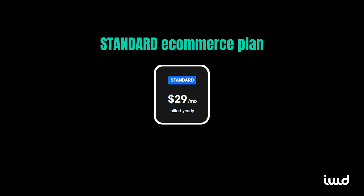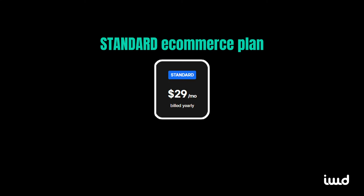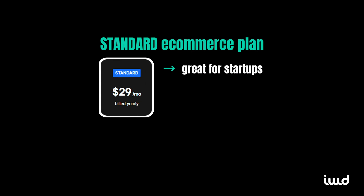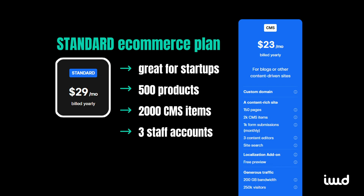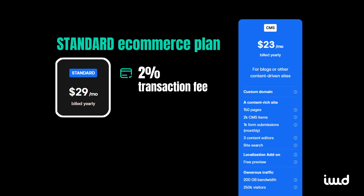The Standard e-commerce plan, priced at $29 per month when billed yearly, is an excellent option for budding businesses. You'll be able to offer up to 500 products — this can be a product, variant, or category — and share up to 2,000 CMS items, like blog posts, in your database. This plan limits your staff accounts to three and includes all the features from the CMS plan in general plans. In addition to the base monthly pricing, you'll also need to account for a 2% transaction fee on all your sales.